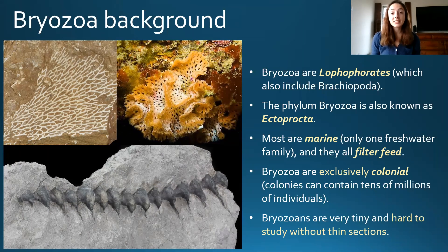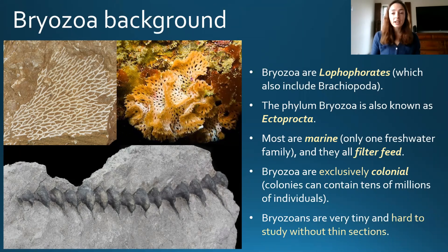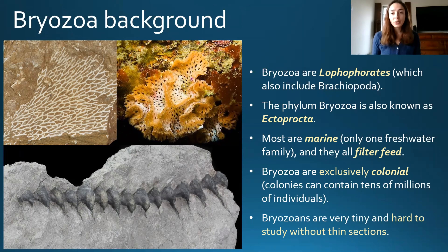Today we're going to be going over bryozoans. Bryozoa is a phylum of invertebrate animals, just like all the other phyla we've been going over in these invertebrate paleontology videos. Bryozoa has been around since the early Paleozoic, just like most of the other phyla we've been talking about. They are within the group Lophophorata, and this phylum is also known as Ectoprocta — so if you've heard it called Ectoprocta in your class, it means the same thing.